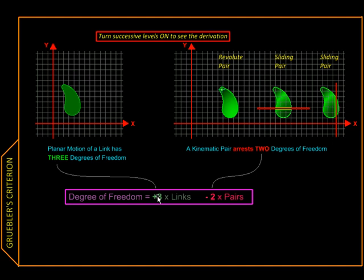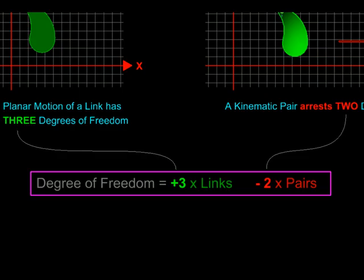And since each pair removes two degrees of freedom, we have multiplied the total number of pairs with minus two. Since one of the links serves as the foundation fixed to the ground, we subtract one from the total number of links.